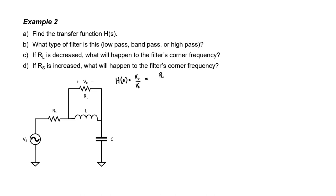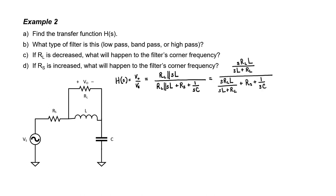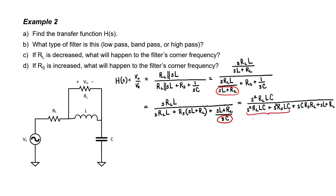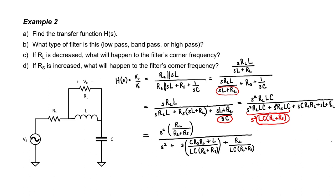In the numerator we have R_L in parallel with SL, where SL is the impedance of the inductor. In the denominator we have the impedance of the entire circuit — the resistor-inductor combination is in series with the source impedance and the capacitor. Let's expand out the elements in parallel, then multiply everything in the fraction by SL plus R_L. In the numerator it just cancels; in the denominator it only cancels in the first term. We then multiply everything by SC, giving two terms of S squared in the denominator, and divide through to isolate S squared.